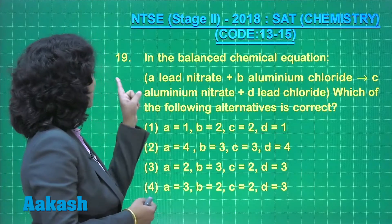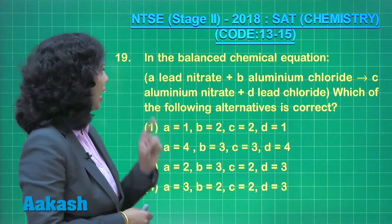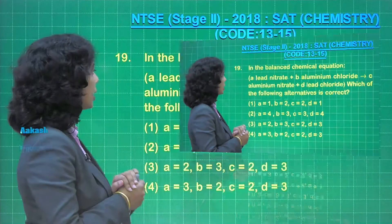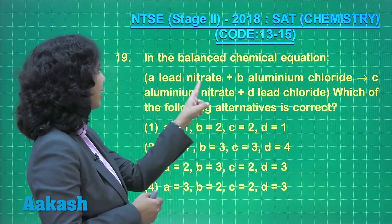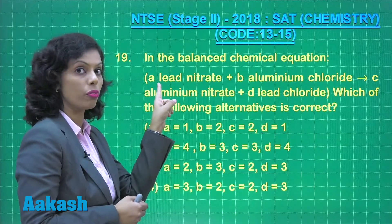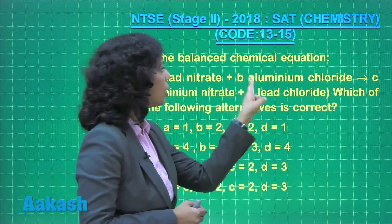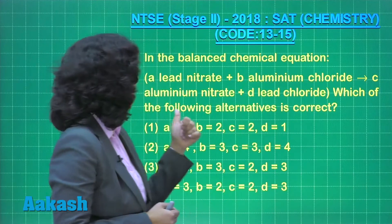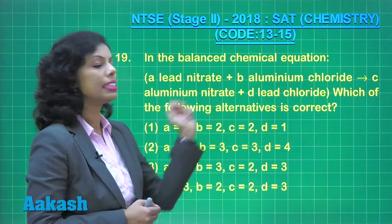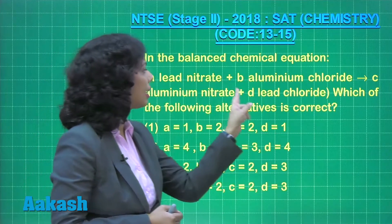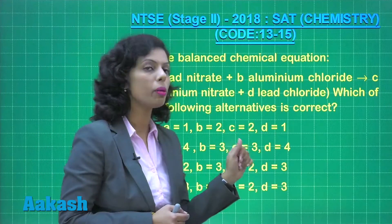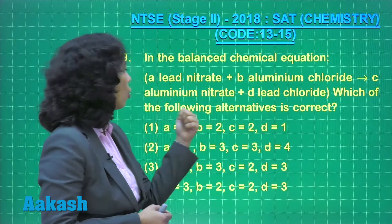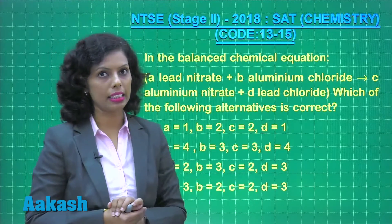Let's take question number 19. In the balanced chemical equation, lead nitrate with stoichiometric coefficient a combines with aluminum chloride with stoichiometric coefficient b, forming aluminum nitrate with stoichiometric coefficient c and lead chloride with stoichiometric coefficient d. Which of the following alternatives is correct?